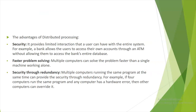The advantages of distributed processing are: first, security; second, faster problem solving; third, security through redundancy. Security means it provides limited interaction that a user can have with the entire system. For example, a bank allows users to access their own accounts through an ATM without allowing access to the entire database of the bank.